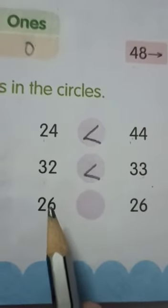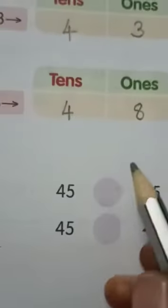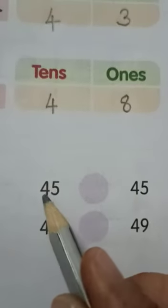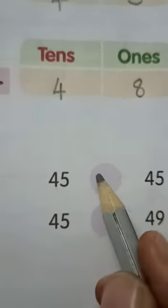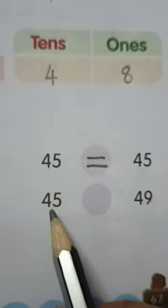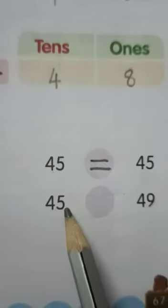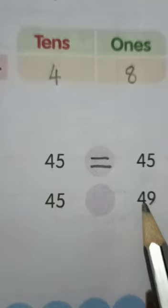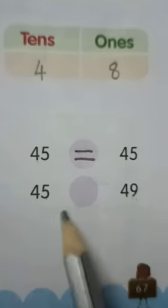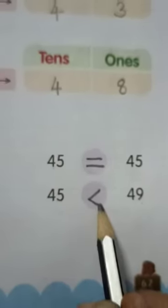In both the places — 1's and 10's — we have the same number, so this is equals to. Here also we have the same number on both the 1's and 10's places, so this is also equals to. And this one: on the 10's place we have the same number, so we compare the 1's place — 5 and 9. 9 is greater than 5, so 49 is greater than 45.